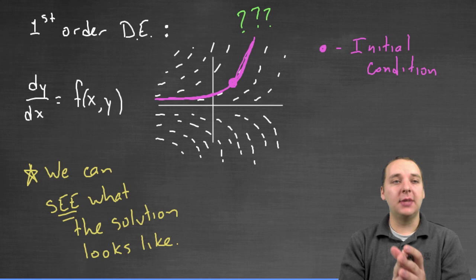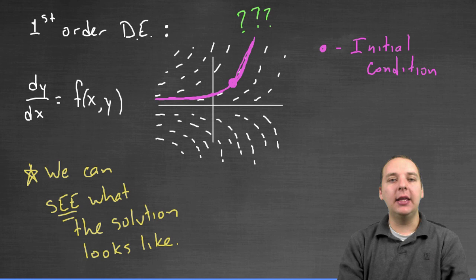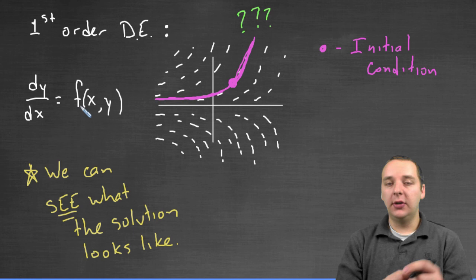Sometimes, and when I say sometimes, I mean one out of ten times, or one out of a hundred times, you might get lucky, and you might be able to look at this graph and say, oh hey, I know who that is. That looks like e to the x, or that looks like whatever. And so if that's the case, you might stumble across what the actual solution is, and be able to write down a formula for it.